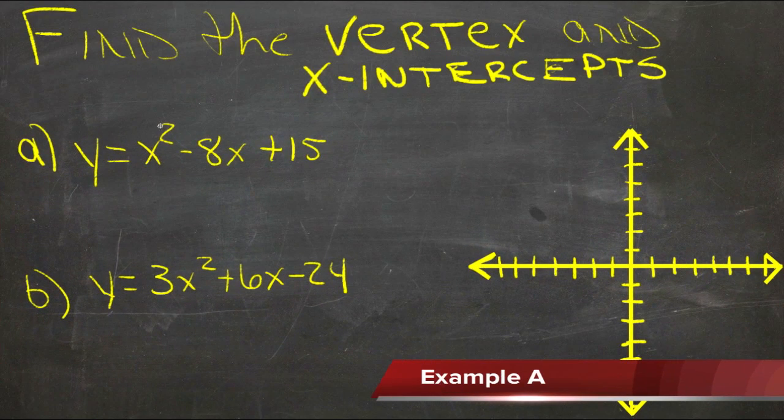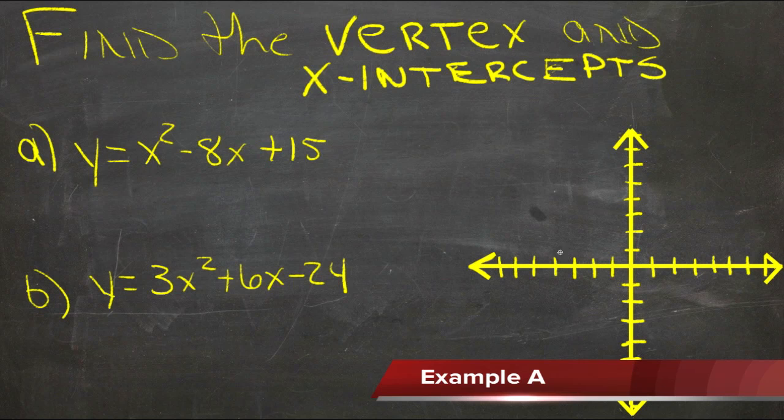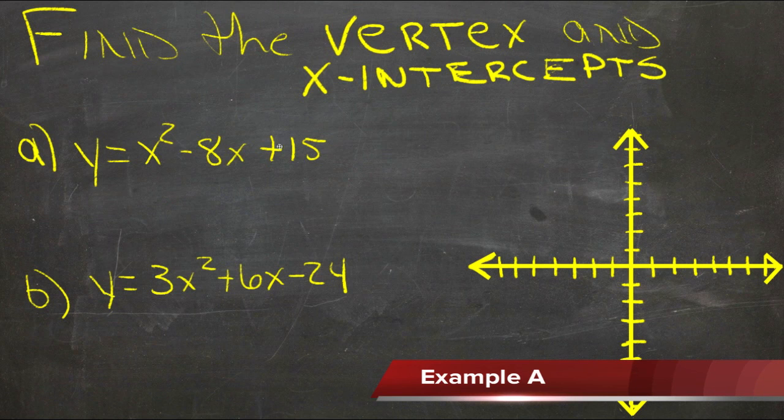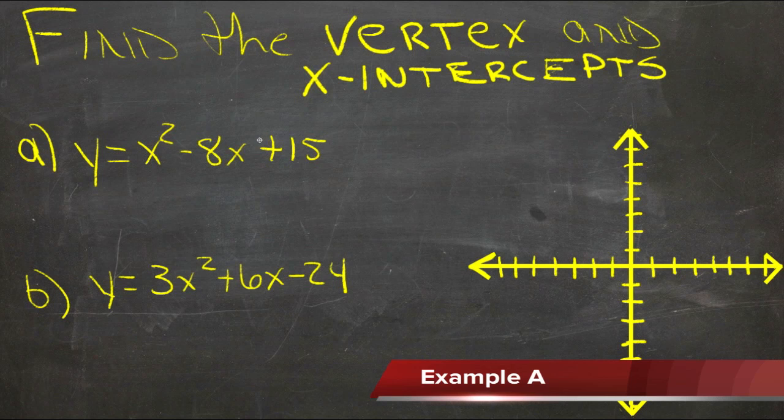We're going to use a specific form for a quadratic function that helps make things easier for graphing, and it's called the intercept form. It's usually just called the quadratic function intercept form.